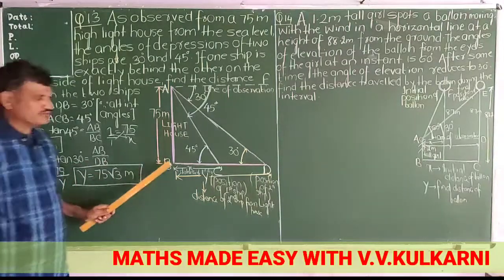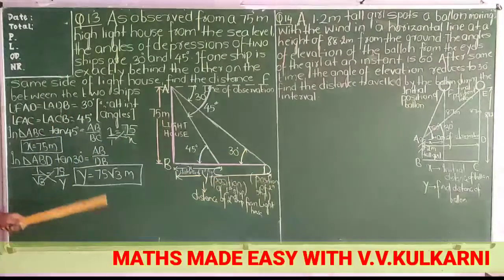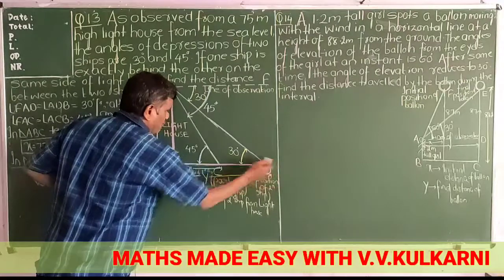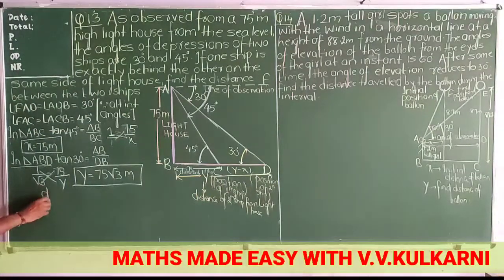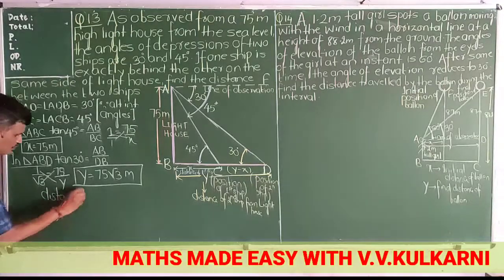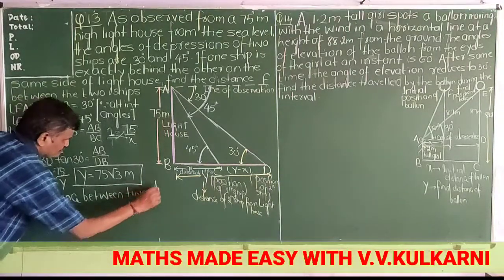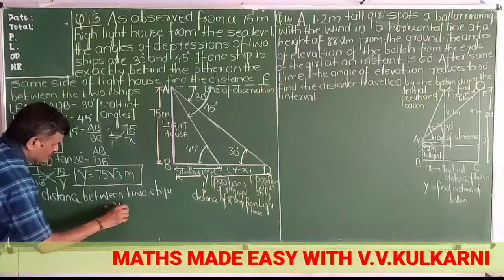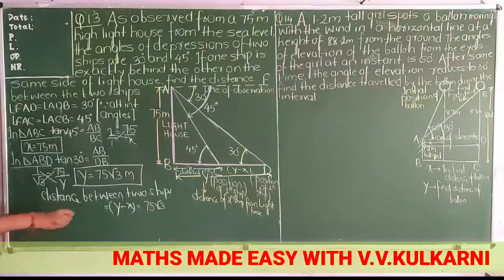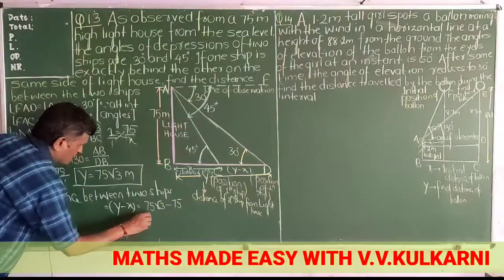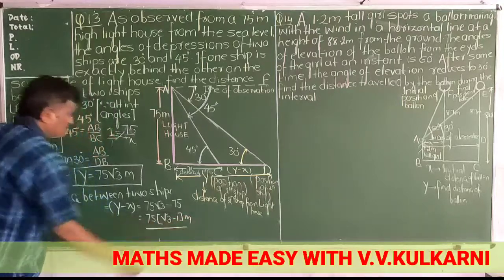The distance of the first ship from the base is x = 75 meters. The distance of the second ship from the base is 75 root 3 meters. If I want the distance between the two ships, then y minus x will give that distance. Distance between two ships = y minus x = 75 root 3 minus 75 = 75(root 3 minus 1) meters. This is the answer.